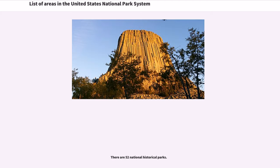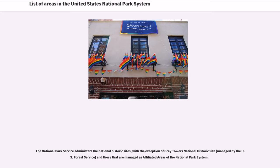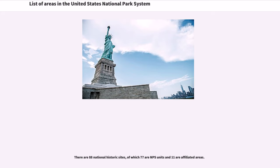There are 52 national historical parks. The National Park Service administers the national historic sites, with the exception of Grey Towers National Historic Site and those that are managed as affiliated areas of the national park system. There are 88 national historic sites, of which 77 are NPS units and 11 are affiliated areas.